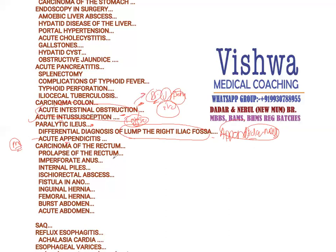Prolapse of the rectum requires surgical correction. Imperforate anus is a congenital condition where the anus is not formed; the patient usually presents with distension of the abdomen because they are not able to pass meconium, and requires surgical correction. Internal piles is a condition with dilated hemorrhoidal veins. Ischio-rectal abscess is very common because of infected rectal glands and can spread the infection. Fistula-in-ano — we can do fistulectomy; there is a tract that develops and can produce trauma.